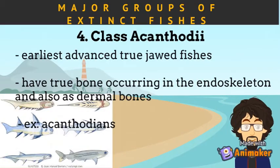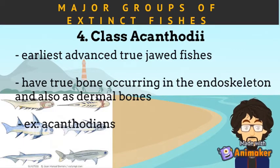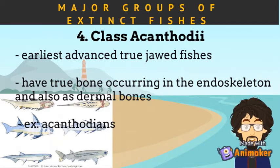Class Acanthidii are the earliest advanced true jawed fishes. They have true bone occurring in the endoskeleton and also as dermal bones. Examples are the Acanthodians.